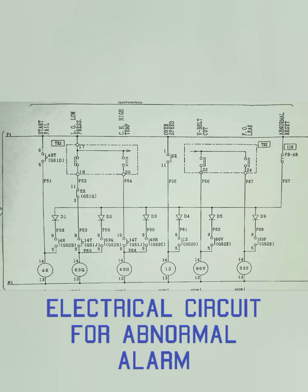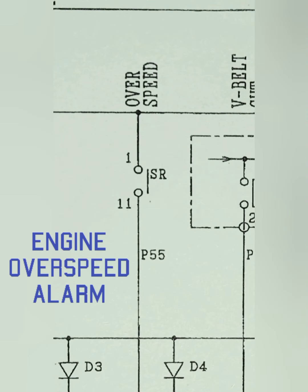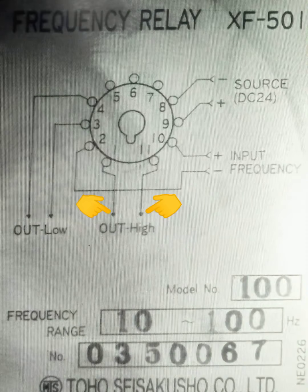Next is the engine over speed alarm. Use a jumper cable and connect number 1 and number 11 from the speed relay to trigger the over speed alarm.